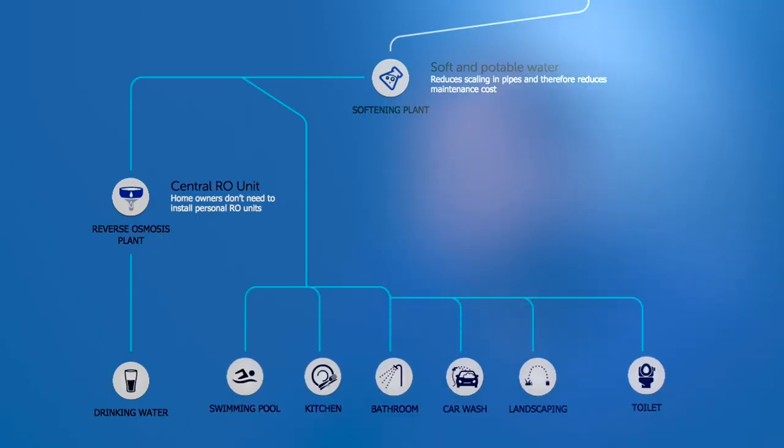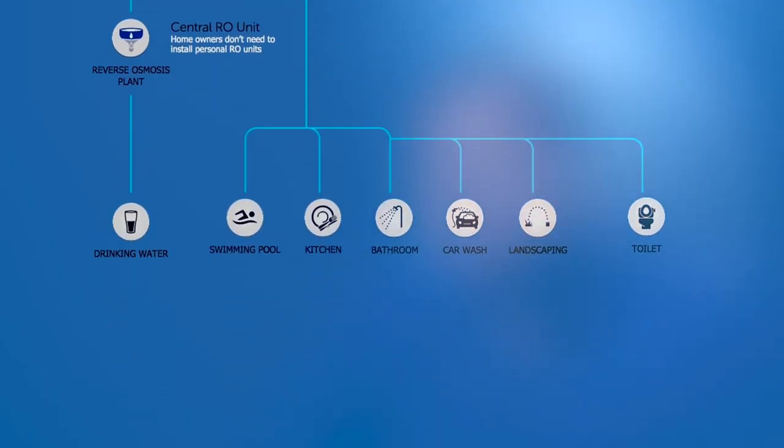The softening plant also supplies soft water to every other outlet in the apartment, including the swimming pool and even the landscaping. Conventional softening plants use salt, which produce environmentally harmful byproducts. Our equipment uses nanotechnology that avoids any such undesirable byproducts.